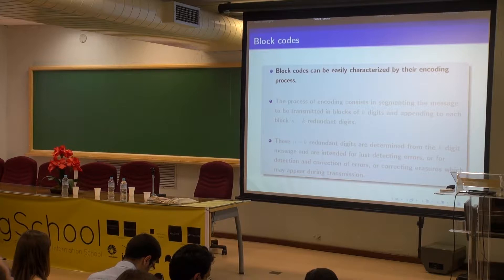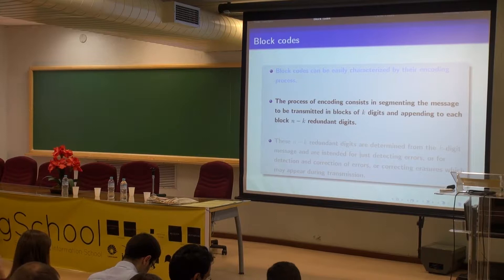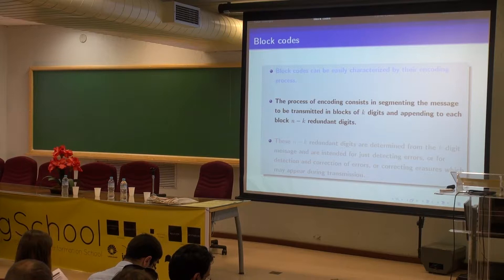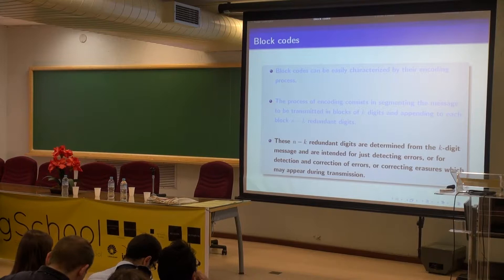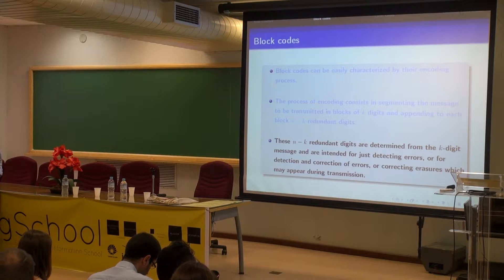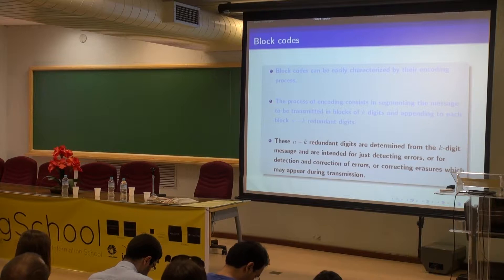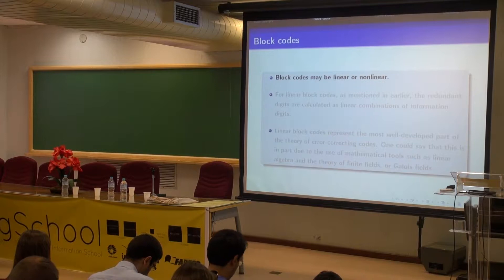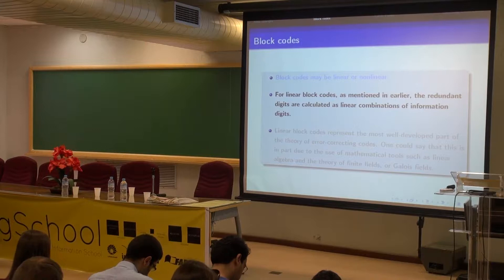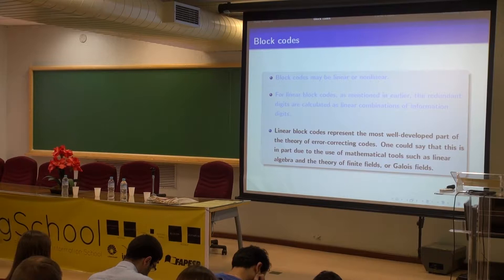When you talk about block codes and the encoding process, you segment your data messages into blocks of K digits and append N minus K parity check digits to each block. You can use the redundant digits just to detect errors, or for detection and correction. Depending on the application, you can also use them for correcting erasures. We go on to linear block codes — as mentioned, they can be linear or nonlinear, but we are most interested in linear block codes as they represent the more well-developed part of error-correcting codes.